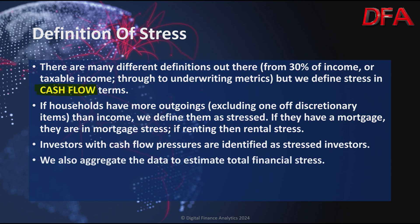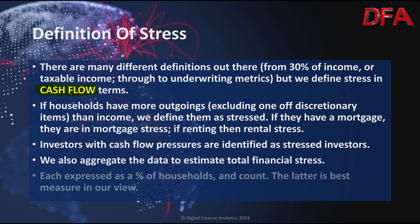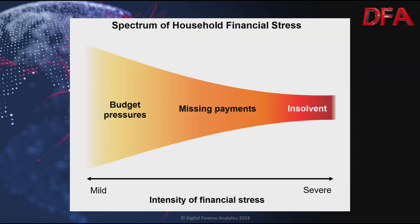We can also aggregate the data to estimate total financial stress. We can talk about it in terms of percentage of households and also the count of households — the latter is better because of the rule of big numbers, and that's where we'll focus. The RBA published a neat chart showing a spectrum of household financial stress from mild budget pressures through to missing payments and ultimately insolvency. Our analysis starts at the mild end and moves across, but we also touch on the default question, particularly today.